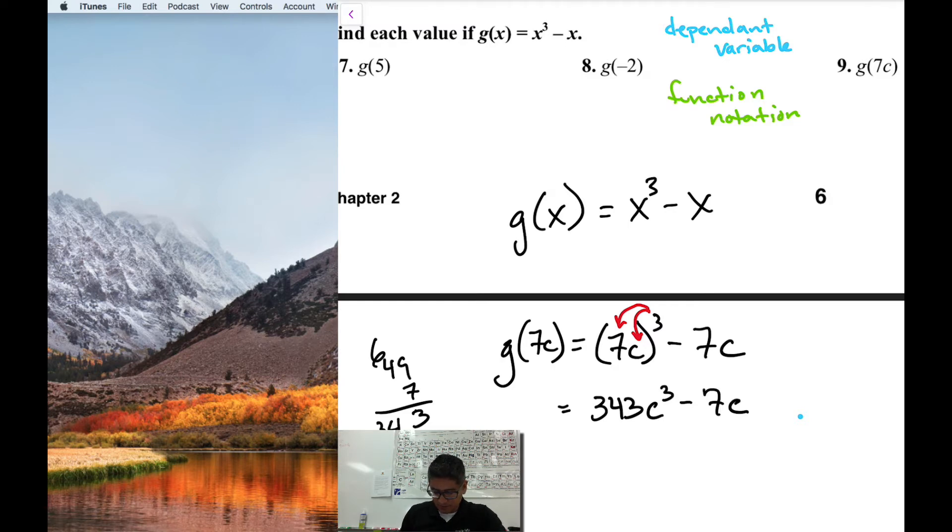Because these aren't really like terms. c cubed and c are not like terms. So that's it. So g of 7c equals 343c cubed minus 7c. Okay, so that does it for that.